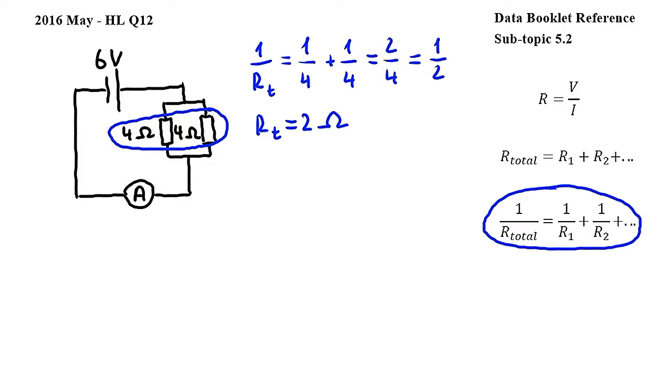So essentially this means that the two resistors here can be replaced by one 2 ohm resistor, keeping the total resistance of the circuit the same. In the question we are told that the ammeter's resistance is 1 ohm.